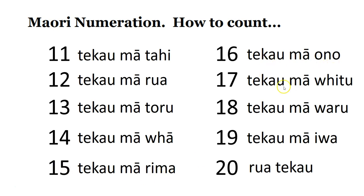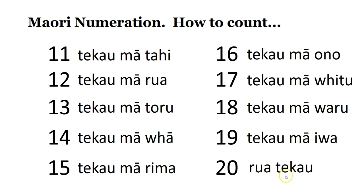Te kau mā ono. Te kau mā fitu. Te kau mā waru. Te kau mā iwa. And then the last one, 20 — we need 2 tens. So we say, the word for 2 is rua, so we say rua te kau.